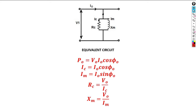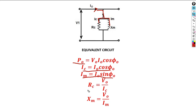For our calculation, we apply the active power formula. The no-load current gives us a reactive current and an active current. To determine the core current, we use the active current formula, and for the reactive current, we use a separate formula. Then applying Ohm's law, the active current helps determine Rc, and the reactive current helps determine Xm.